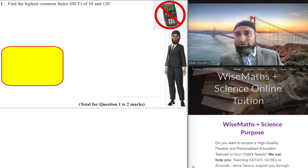Welcome to another Wise Maths and Science video. We've been asked to find the highest common factor of 54 and 120. First and foremost, I'll think about breaking it down into the product of prime factors.